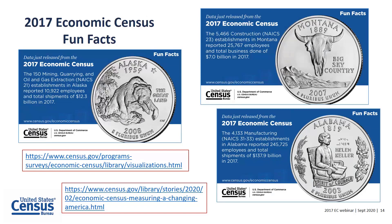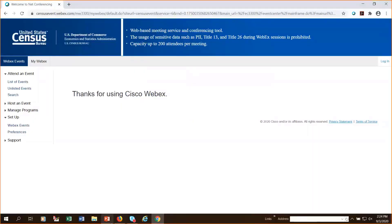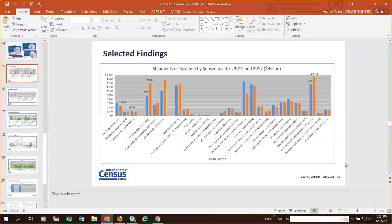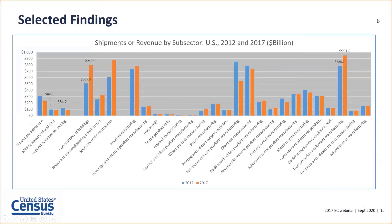I'd now like to turn over the presentation to my colleague Mr. Andy Haight, who will be diving into data from the mining, construction and manufacturing sector. Thank you so much, Linda. My name is Andy Haight. I am an economist at the U.S. Census Bureau. I've worked at the Bureau for a little over 30 years in our economic directorate — the part of the Census Bureau responsible for all of those great business surveys Linda was talking about. Today I'll be discussing some of the data findings for these three sectors from the 2017 Economic Census.